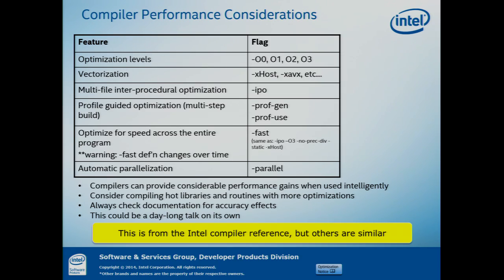There is interprocedural optimization, which looks across function boundaries to see if optimizations can be applied. Profile-guided optimization profiles your code and generates a report that the compiler will use in its next compilation to optimize — for example, putting hot functions that call each other next to each other in the binary. Dash-fast is a grouping of several other flags. And dash-parallel enables the auto-parallelization that James mentioned, which sometimes works but often doesn't yield much depending on your application.